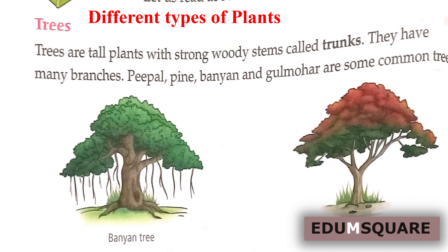First one: Trees. Trees are tall plants with strong woody stems called trunks. They have many branches. Peepal, pine, banyan, and gulmohar are some common trees. So now we know tall plants are called trees, and they have a strong woody stem.